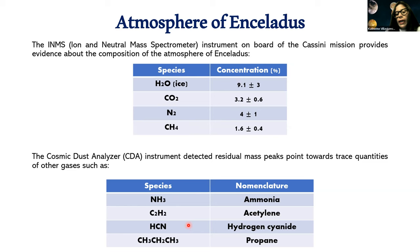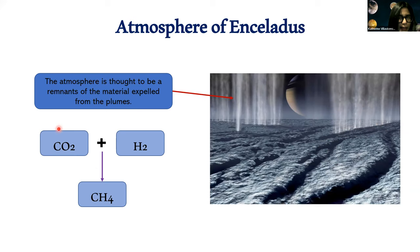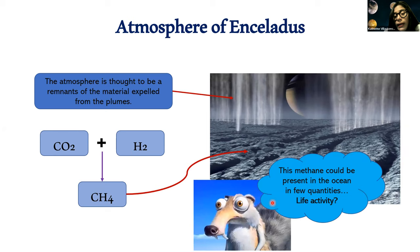The atmosphere of Enceladus is thought to be a remnant of material expelled from the plumes — the fractures and plumes present at the south pole. The most relevant elements present are carbon dioxide and molecular hydrogen, and the combination of them could create methane. We don't know if this methane could be present in the ocean in small quantities or if it could be related to life activity, but we are going to investigate.